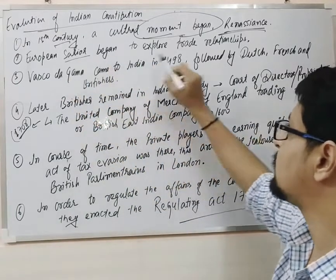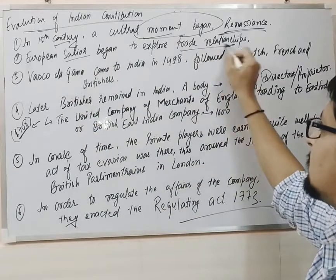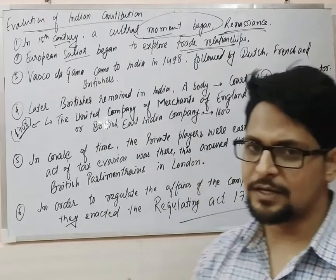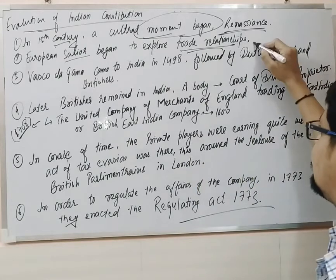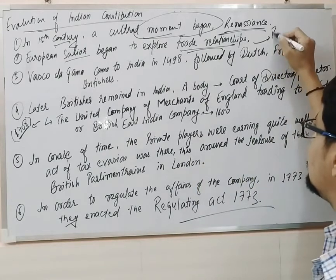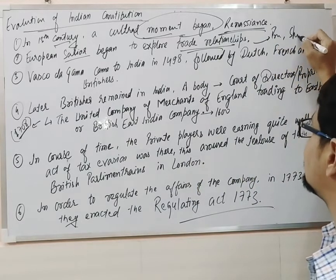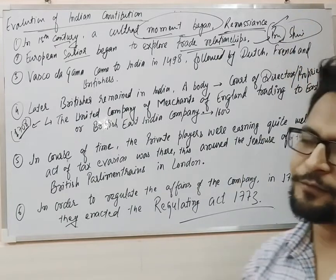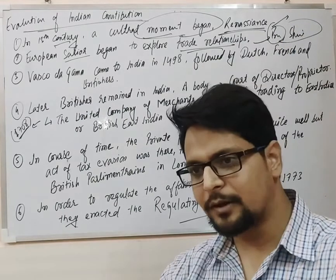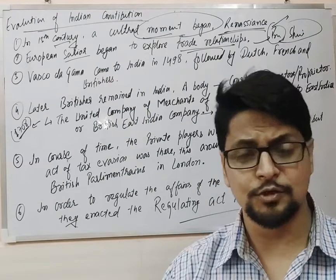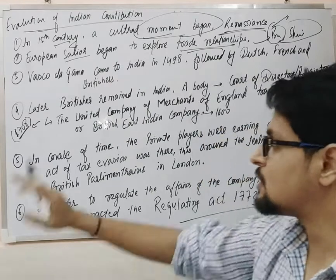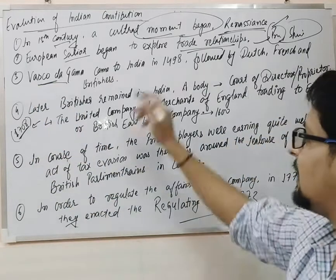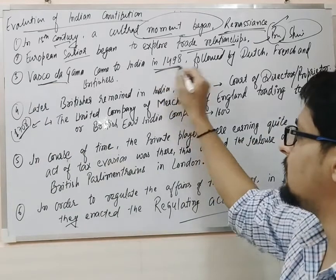European sailors began to explore trade relations with a number of areas. So they came to this part of the world — that's the eastern part. A few Europeans were Portuguese and Spanish. Portuguese reached India, and apart from the Portuguese, a number of other Western Europeans also reached India. The first person who reached India was Vasco de Gama, and he came to India in 1498.